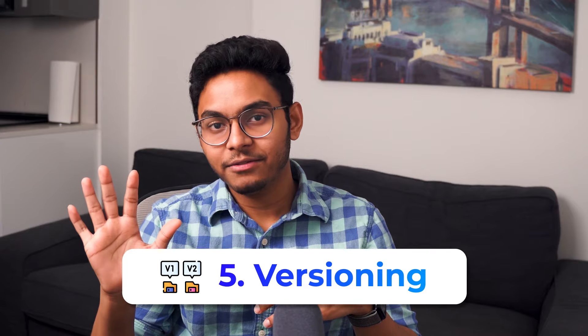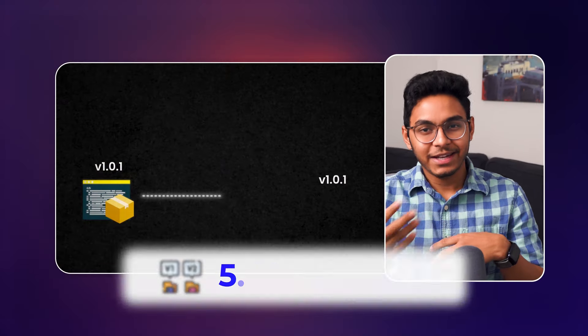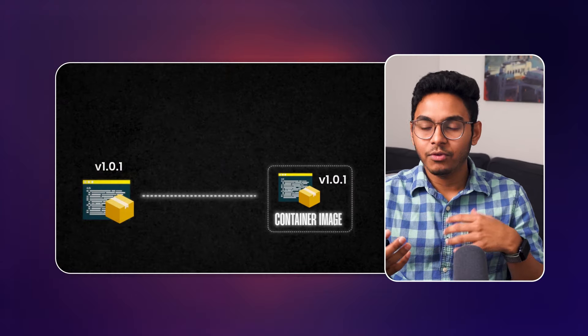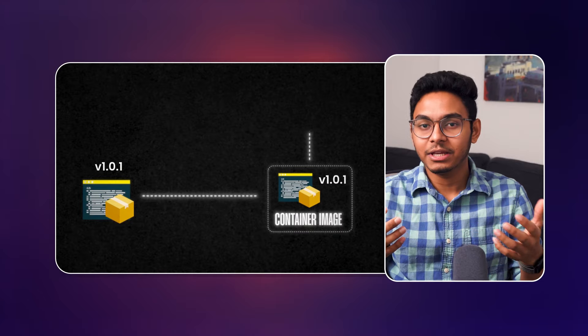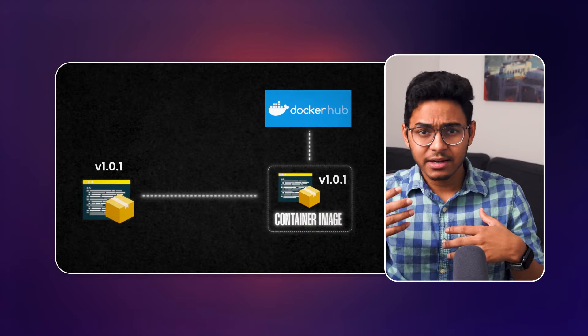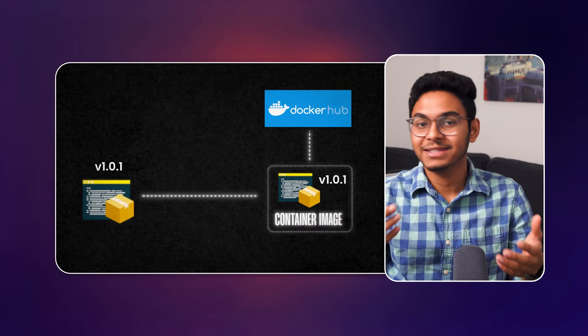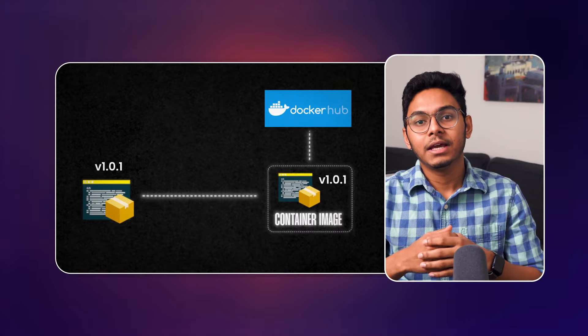The fifth and final benefit is versioning. When we containerize our app, we provide a tag indicating the application's version. The created container image is pushed to Docker Hub with the same exact tag. This way, Docker Hub hosts all the versions of our application and we can choose to pull whatever version we want.